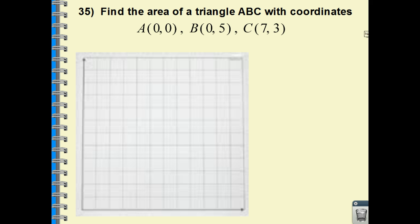Next one says find the area of a triangle with these given coordinates. The first coordinate I have is labeled as the origin of 0, 0. And that would be right here. I have 0, 5. So 0 on the x, 1, 2, 3, 4, 5. So there are two vertices of my triangle.